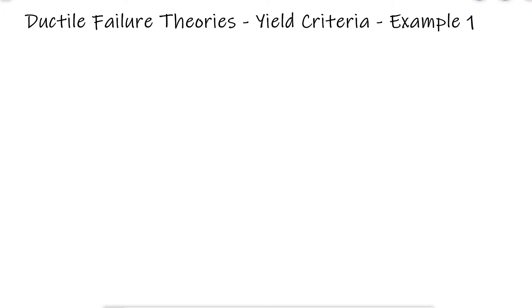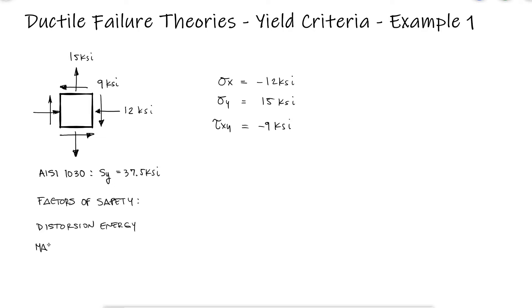A structural component made of 1030 hot rolled steel is found to have a critical stress element with sigma x equal to minus 12 ksi, a sigma y of 15 ksi, and a tau xy of minus 9 ksi. What are the factors of safety using the distortion energy and the maximum shearing stress theories?